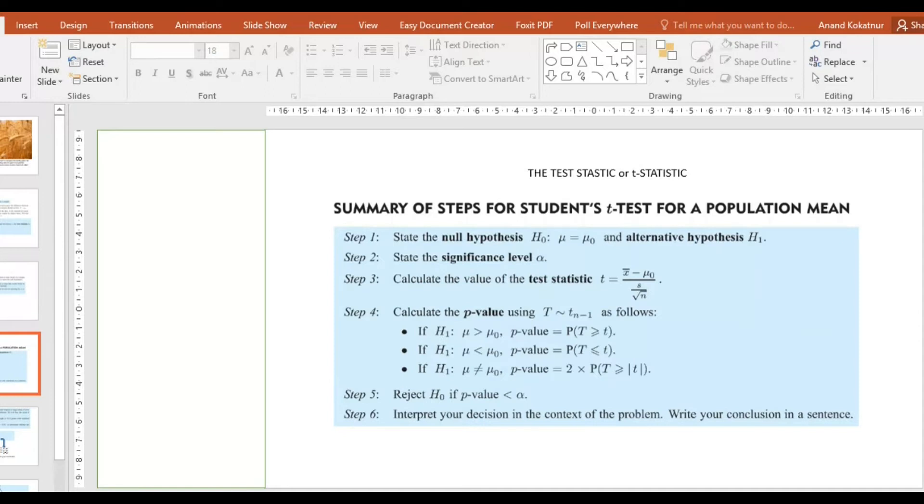In exams it would be provided because you need to compare it with the p-value, which we are going to discuss. There are six steps you need to follow, and once you follow these steps you should be able to answer any question in the examination. The first step is to state the null hypothesis H₀, which is usually equal to something. In this case it is μ = μ₀. Then you'll have to state the alternative hypothesis H₁, which could be μ > μ₀, μ < μ₀, or μ ≠ μ₀.